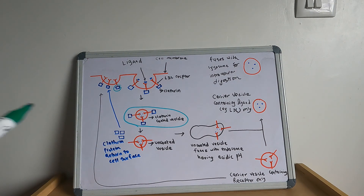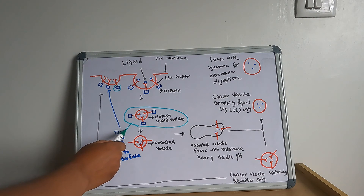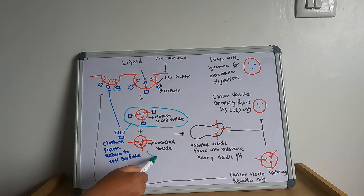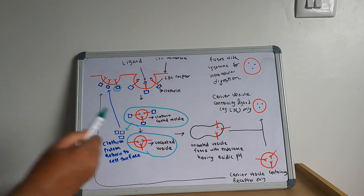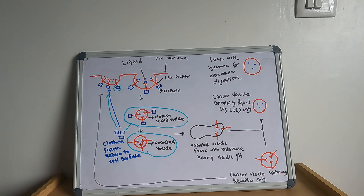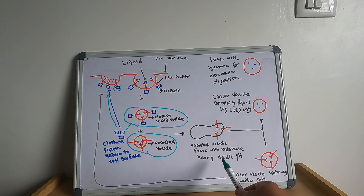The vesicle loses its clathrin coating to become an uncoated vesicle. The clathrin is returned to the inner surface of the cell membrane for recycling.